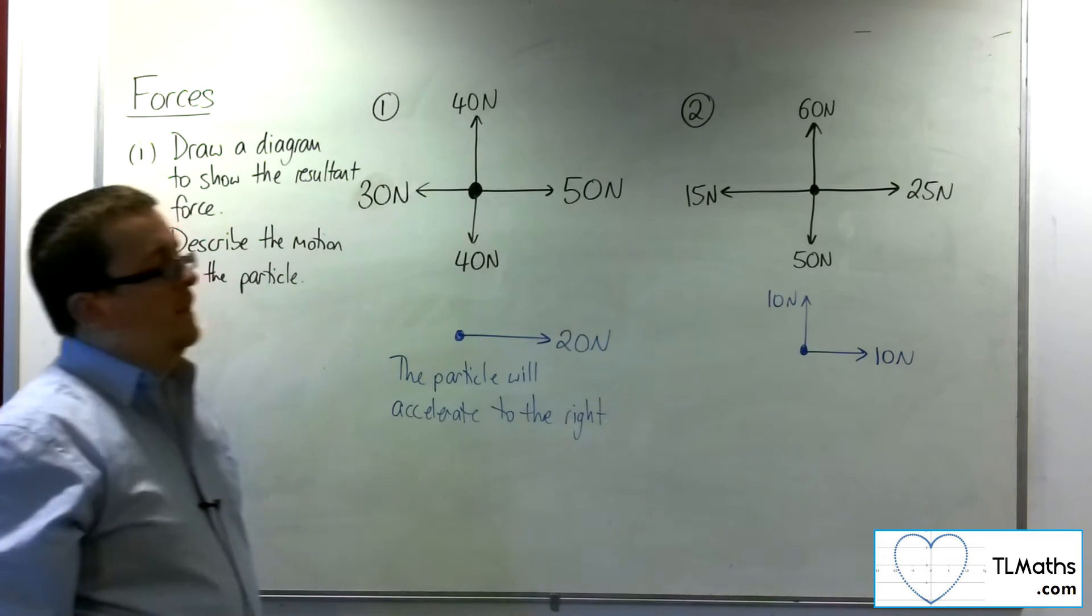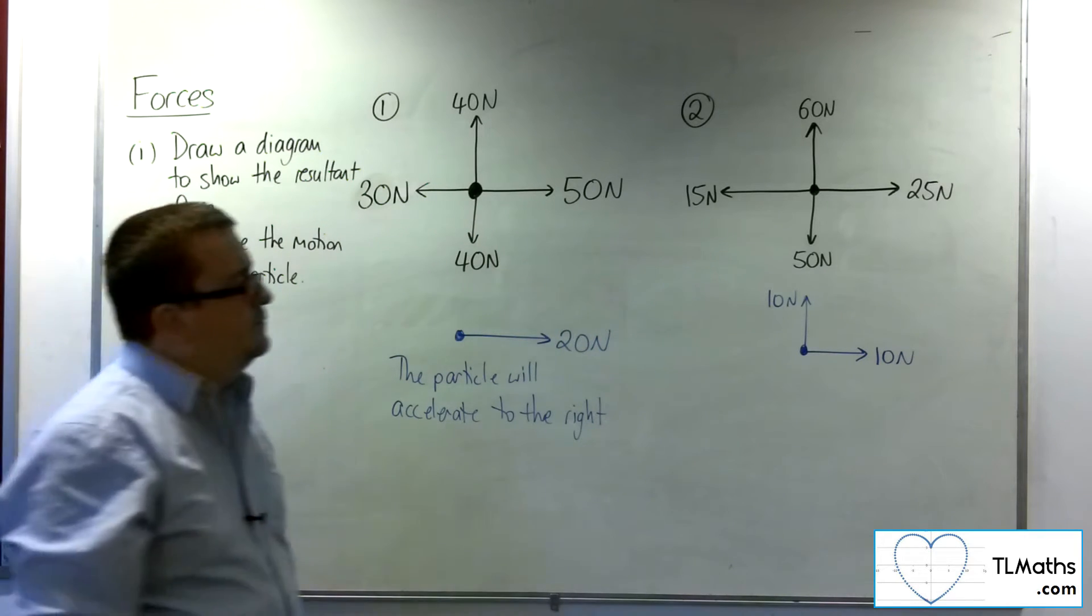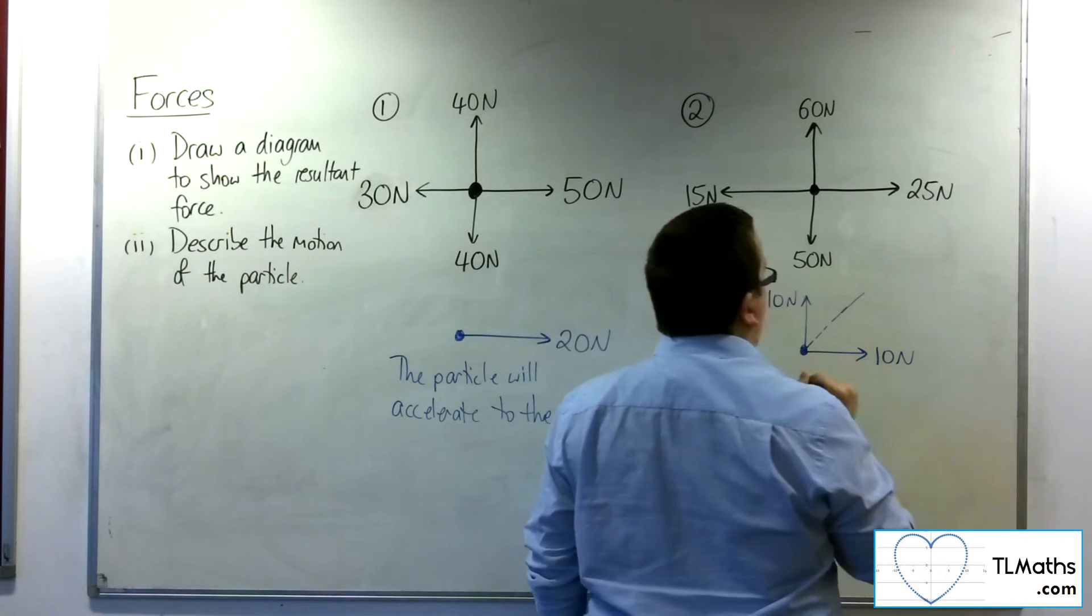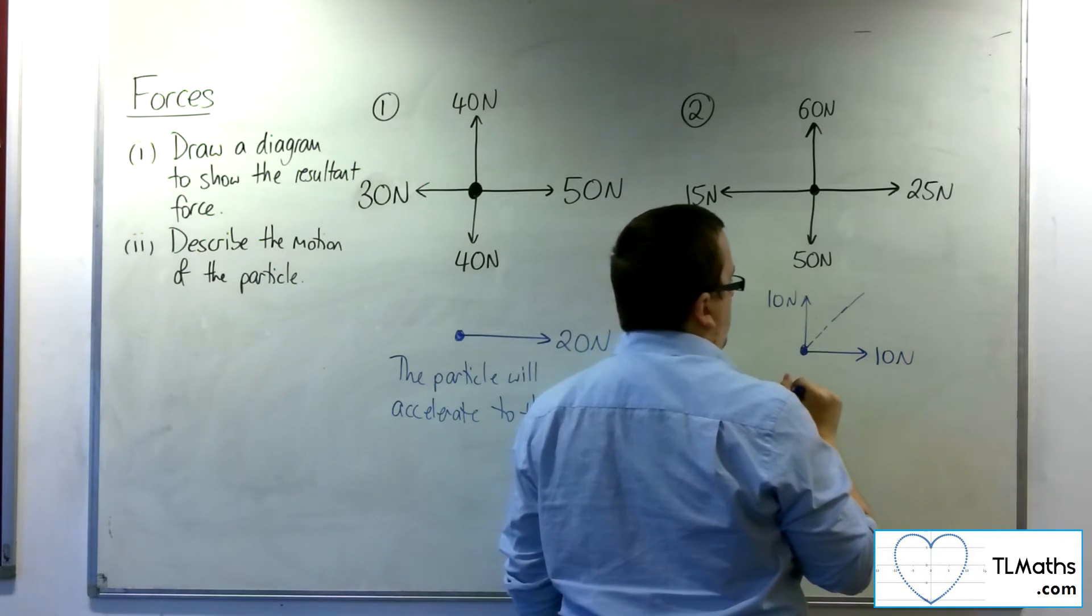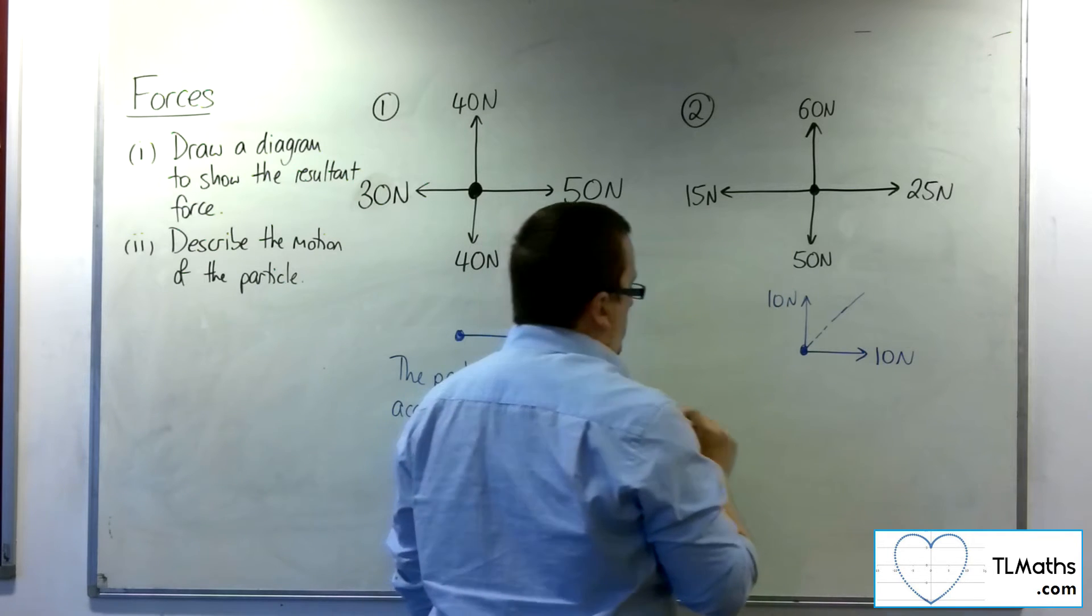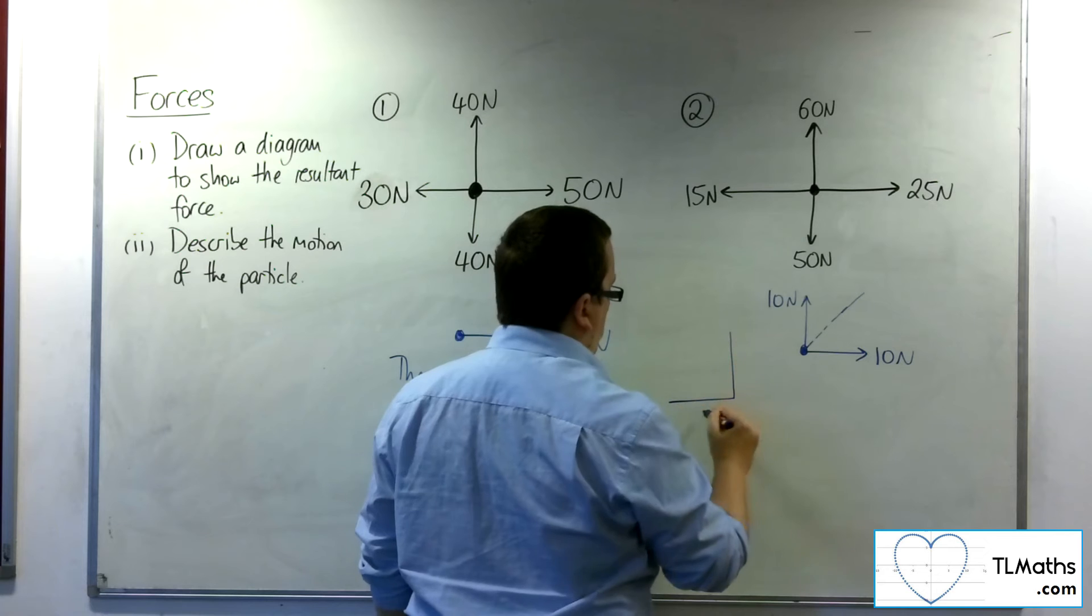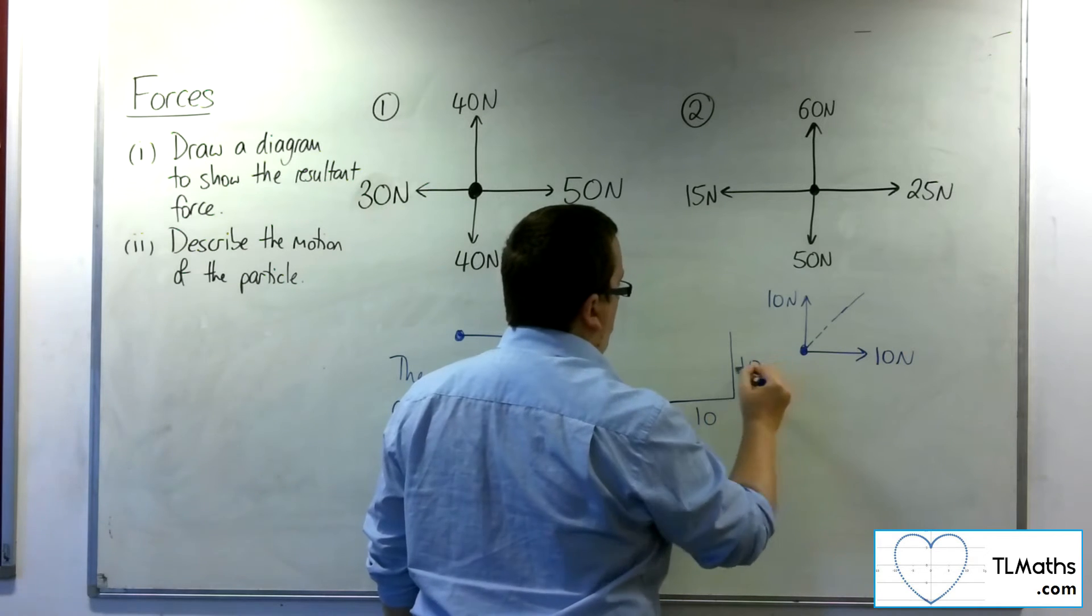So what will happen? Well, it'll be on a trajectory going up that way. So what we can do is visualize this like a triangle. So 10 newtons along, 10 newtons up.